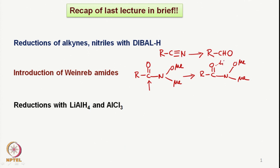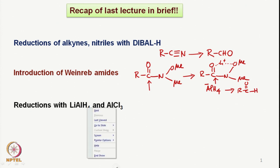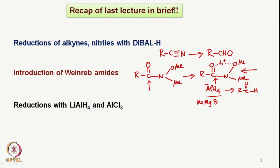For example, if we have Li+ here, then we can have the reduction of it leading to aldehyde formation. The over-reduction or over-reaction of nucleophiles is stopped because of the chelation. We discussed various types of nucleophiles that can be added to the Weinreb amides. Apart from hydrogen addition like a reducing agent, we can also take methyl magnesium bromide or any Grignard reagent, and the reaction can be stopped up to the corresponding methyl ketone.